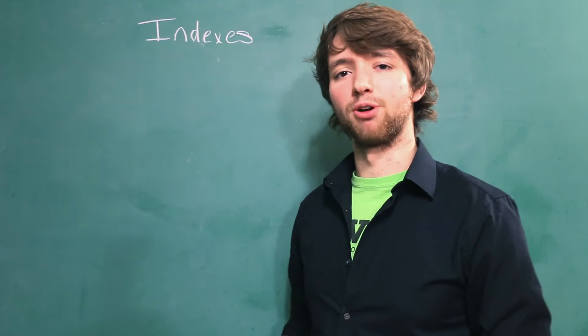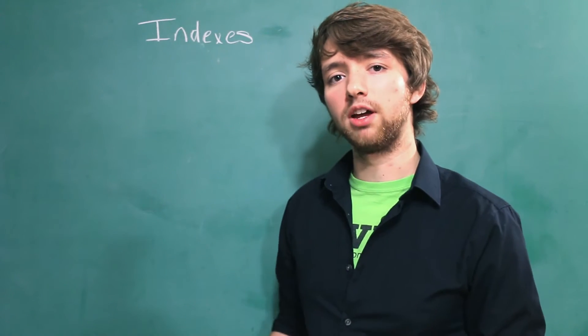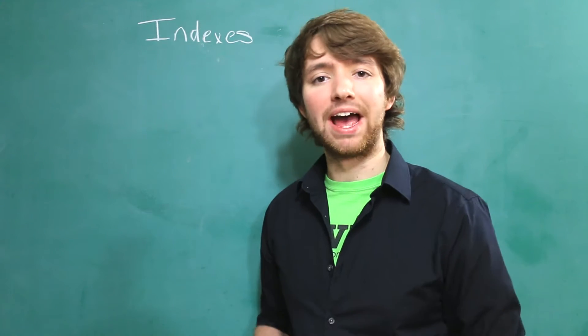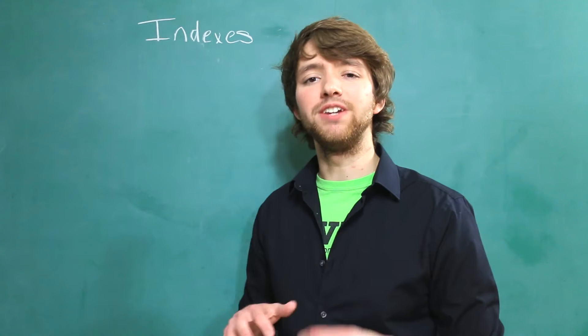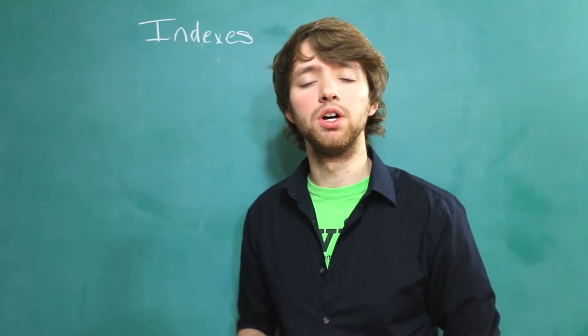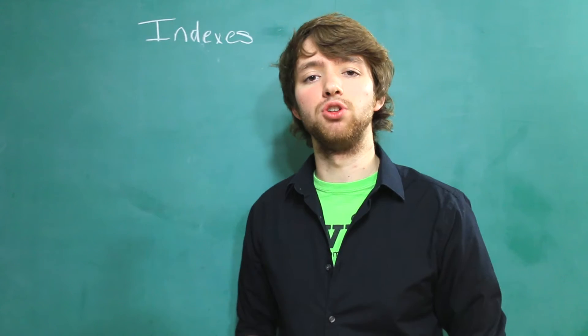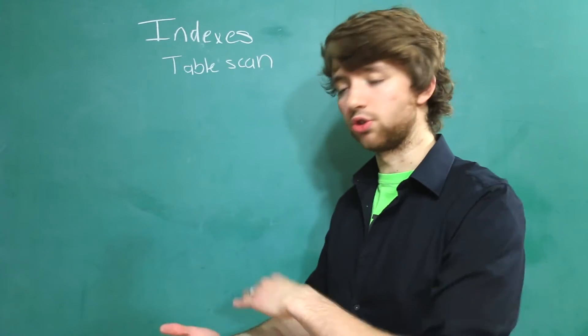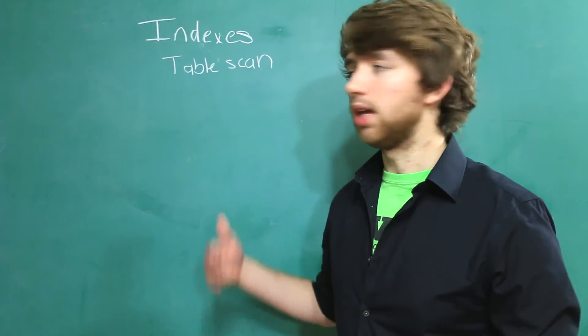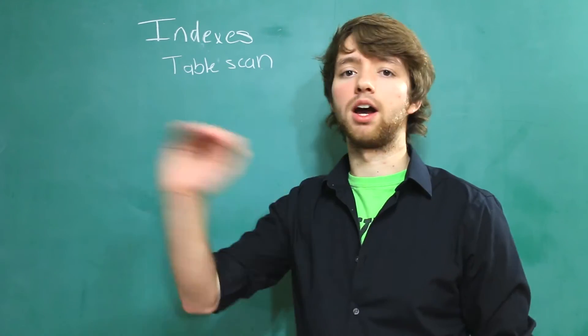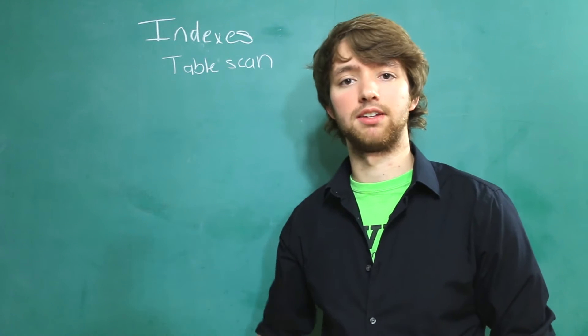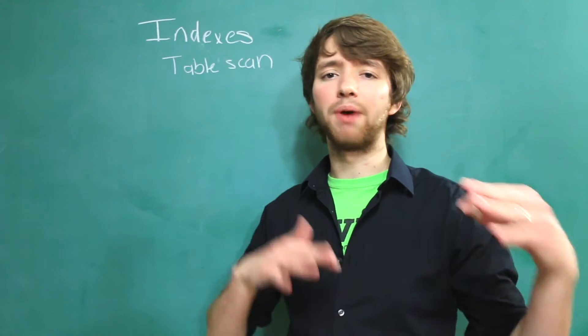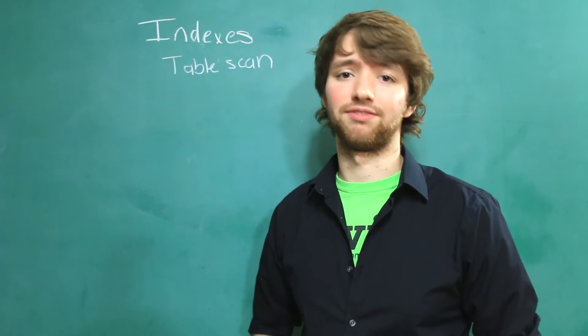Another way to really grasp how useful indexes are is to imagine life without indexes. If you don't have an index on a column and you need to find a column using the select statement for example, your database is going to have to do what's known as a table scan. This is kind of similar to looking through a book for something page by page. It'll essentially just go one at a time through all of your rows until it finds that data. That's not the way to do it. If you have it alphabetically, it's already going to know about where your data is, so it's a whole lot faster.